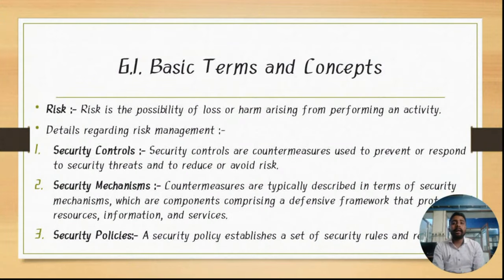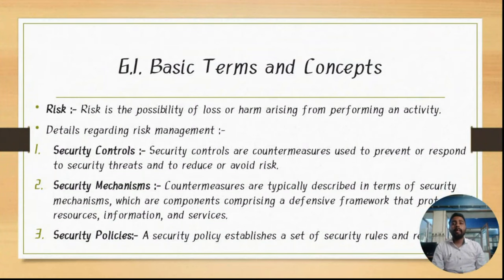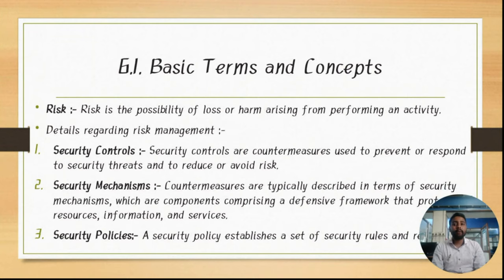Regarding risk management covered in this chapter, there are three different ways to manage risk. First is security control — a countermeasure used to prevent and respond to a security threat and to reduce or avoid risk. For avoiding and reducing risk, security control acts as a countermeasure for prevention and response to security threats. Details on how security countermeasures are typically implemented are outlined in the security policy, which contains a set of rules and practices specifying how to implement a system, service, and security plan for maximum protection.